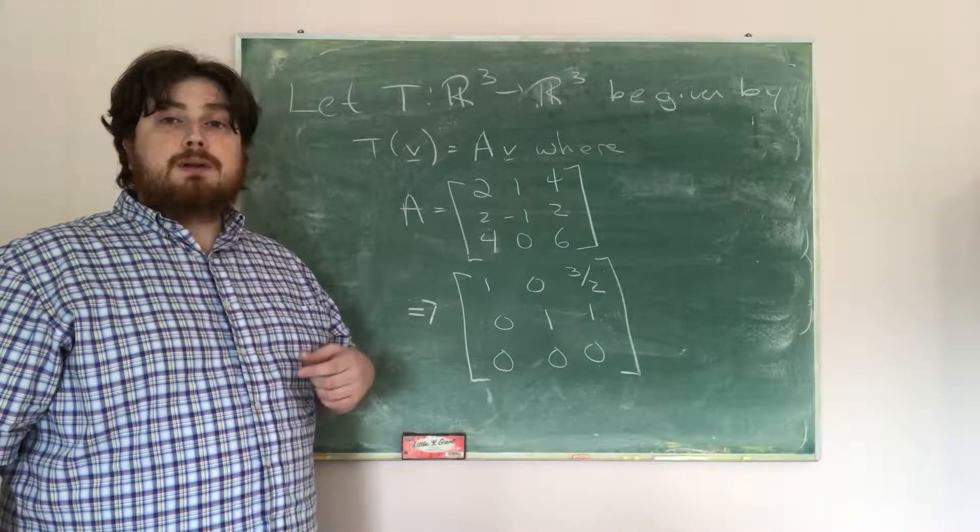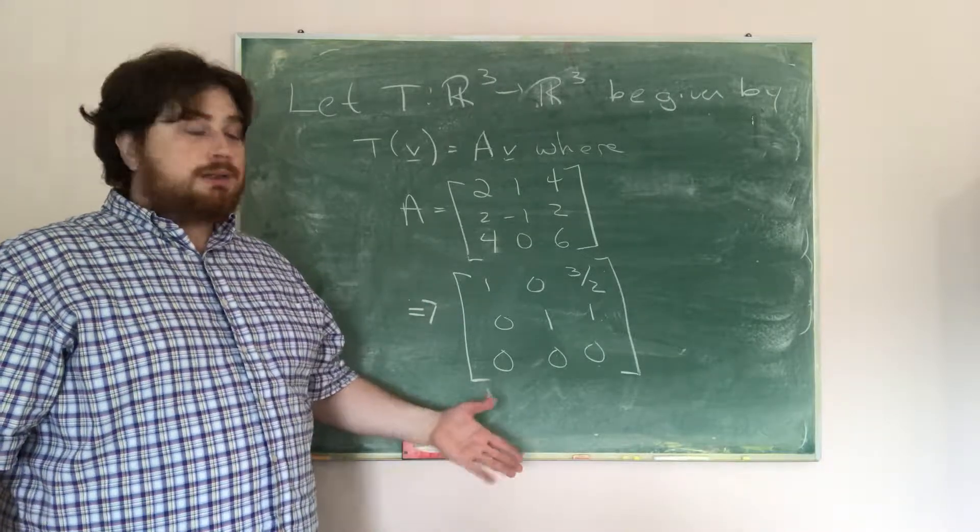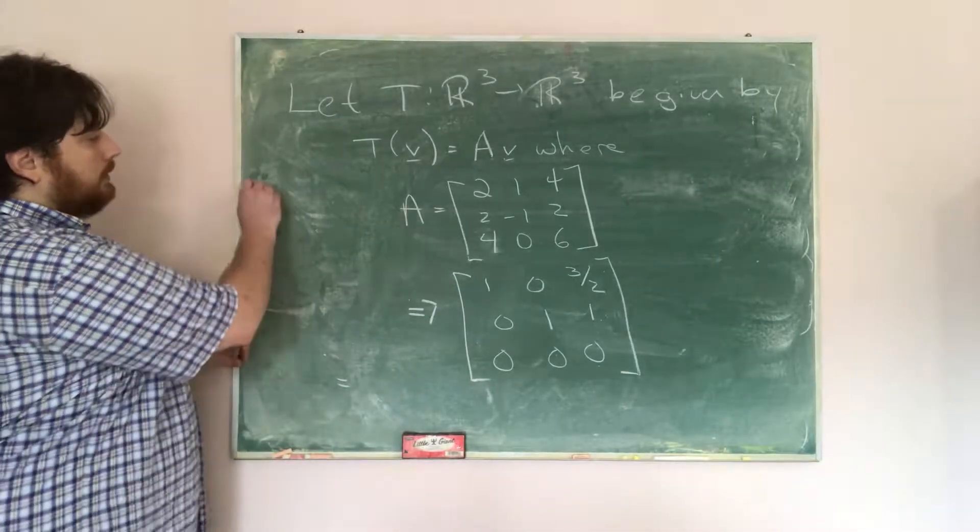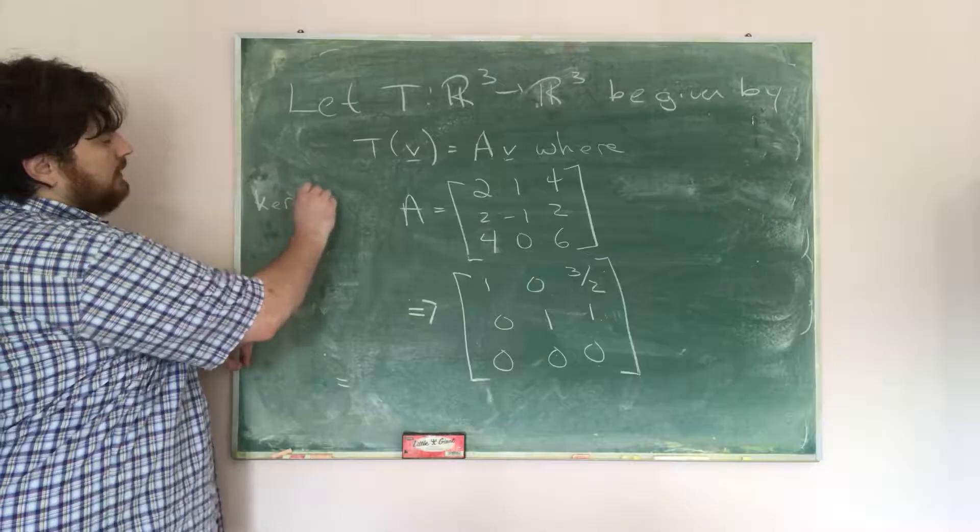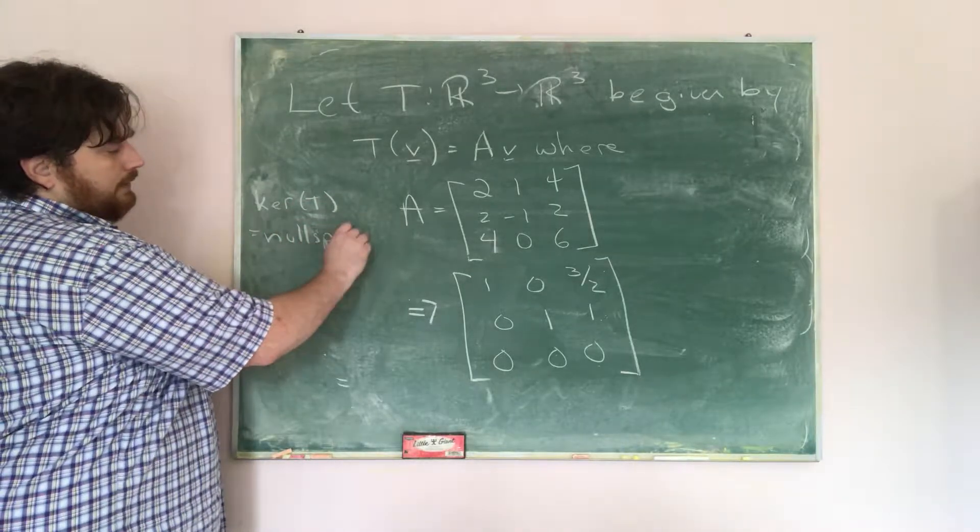Now in order to find the kernel of a linear transformation, recall that that just means that we have to find the null space of the given matrix. So therefore, if we want to find the kernel of T, we find the null space of A.